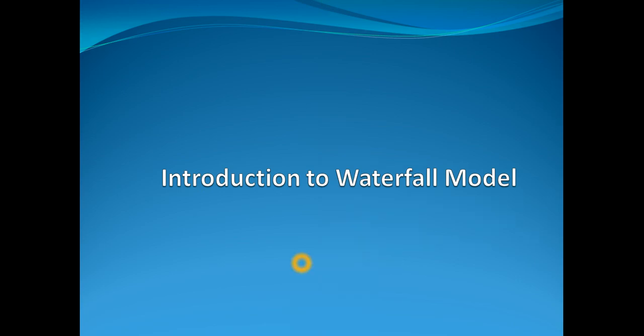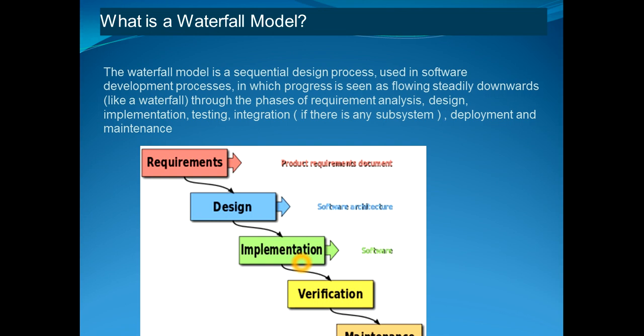Today we'll discuss another important concept of software development called the waterfall model. The waterfall model is a sequential design process used in software development in which progress is seen as flowing steadily downwards — like a waterfall — through the phases of requirement analysis, design, implementation, testing, integration, deployment, and maintenance. As shown in the figure, progress moves downward.